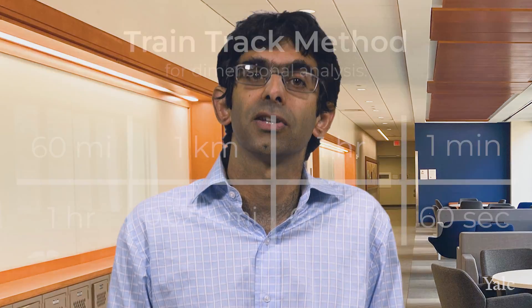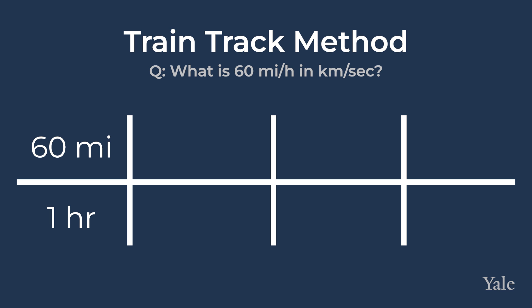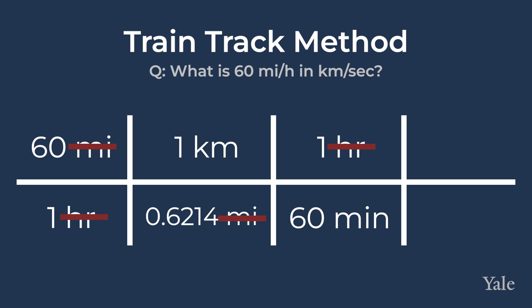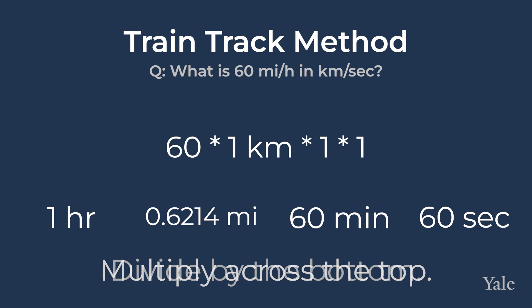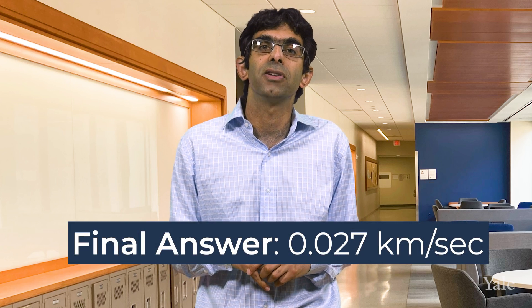I like to work out my dimensional analysis problems on train tracks like this, because it's easy to follow which units cancel out. You want all the unwanted units to cancel out until you're only left with the units that you desire. So 60 miles per hour becomes kilometres per mile, then kilometres per minute, and finally kilometres per second. You multiply across the top and then divide by all the numbers in the bottom row to obtain your final answer. In this case, our final answer is 0.027 kilometres per second.